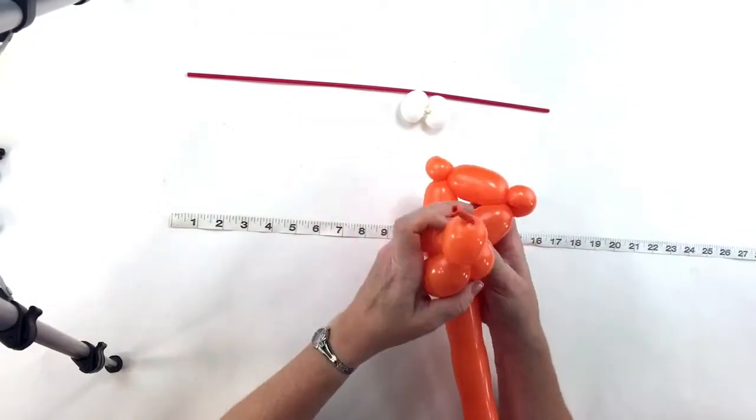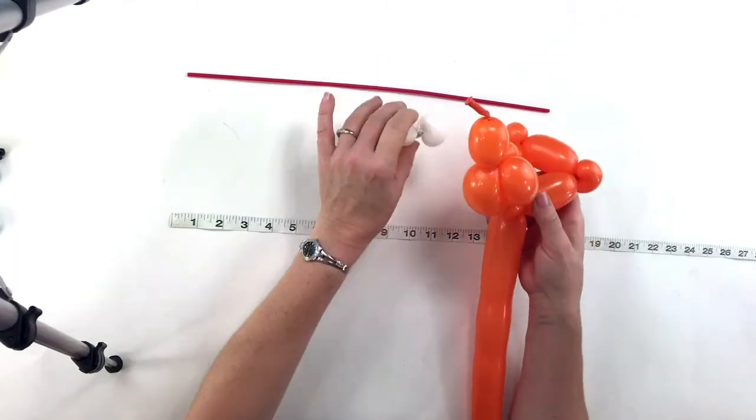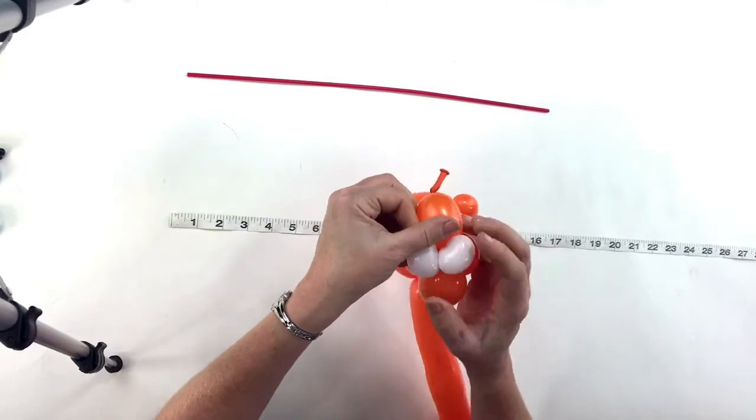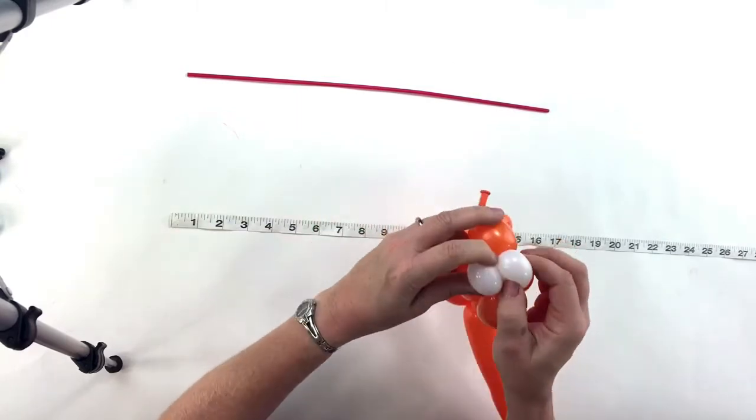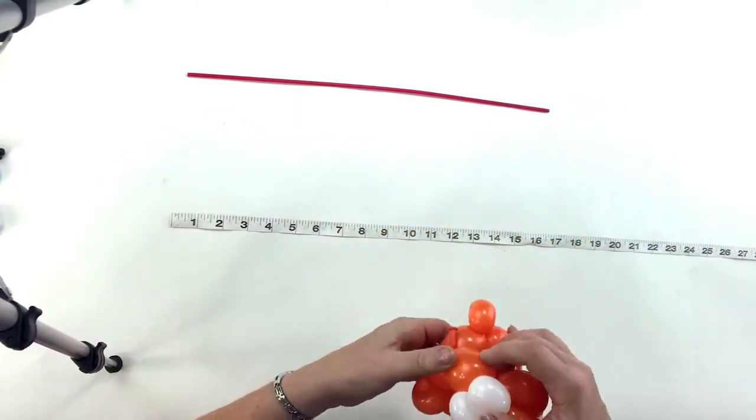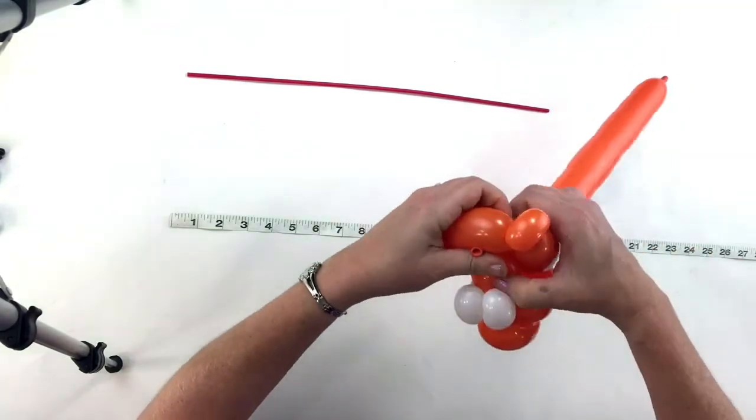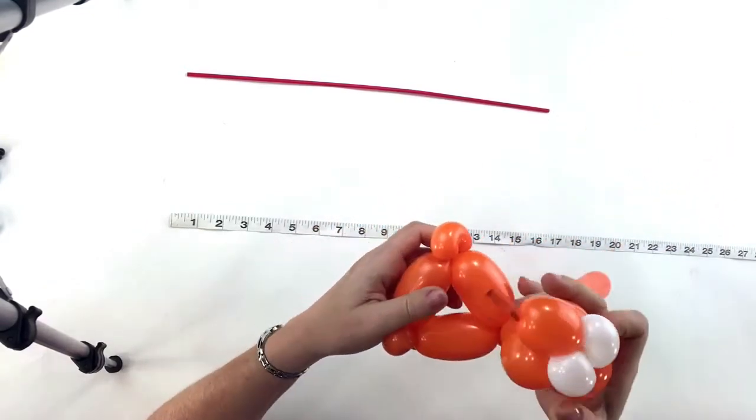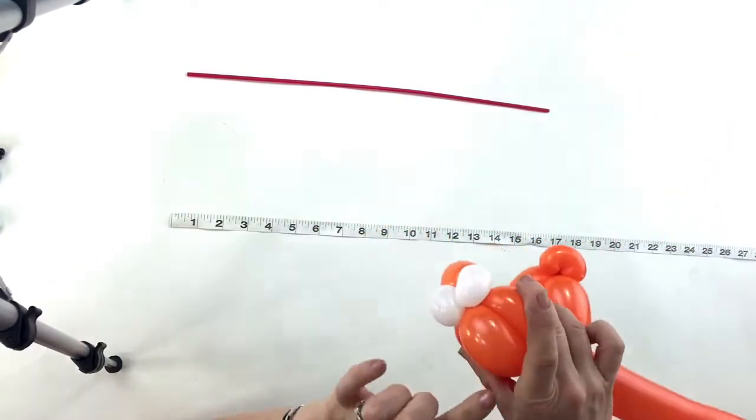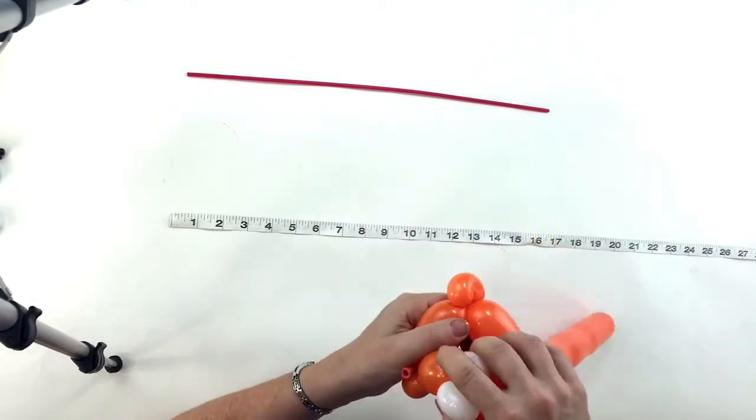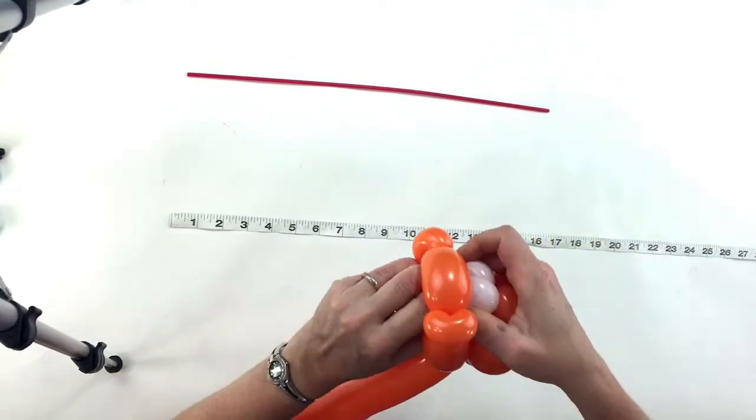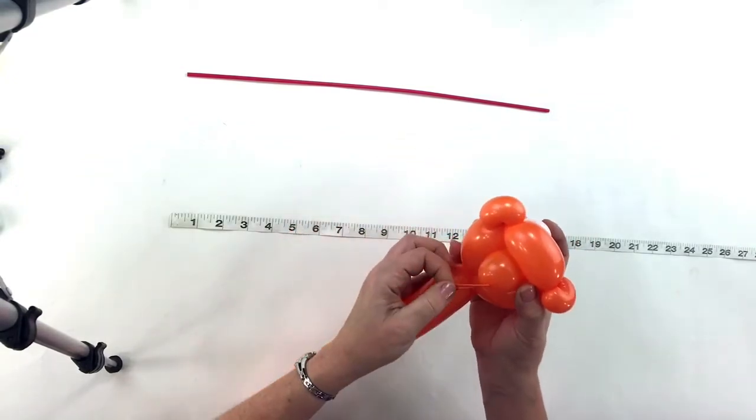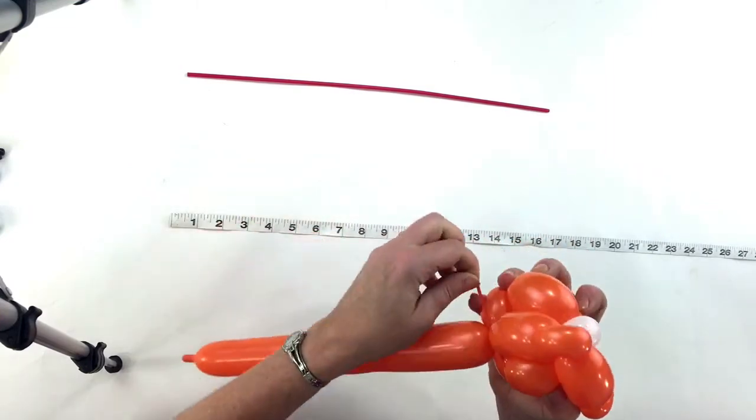Now before we tuck this in, we need to pick up our eyes and they're gonna go right here under this first bubble we twisted, right like that. Now you want to take this one and a half inch bubble and tuck it through the head bubble. You want the smaller bubble on this three bubble roll through to be in the front. It should be the smaller part of the nose. Pull this through the back of the head and wrap this knot. Pull it down and wrap it around the neck.